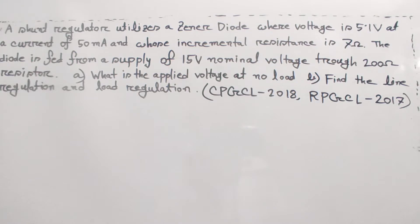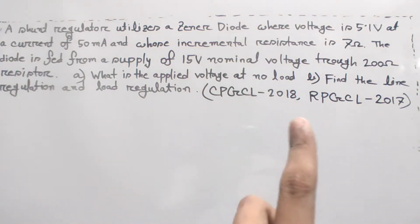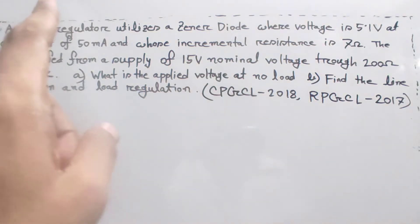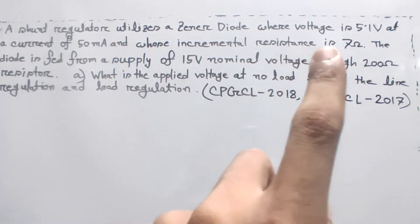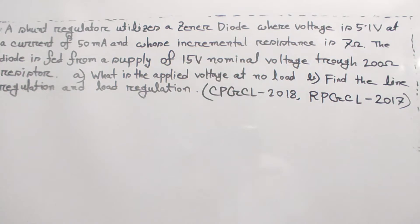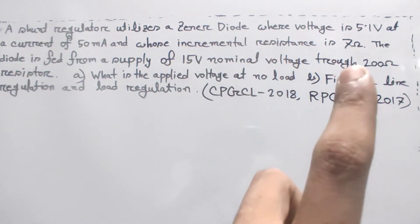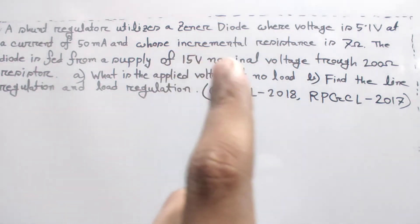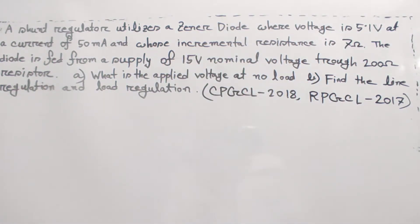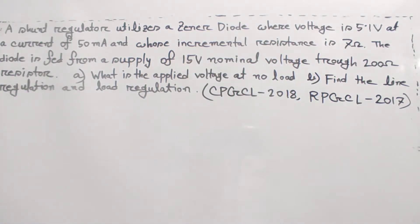At a current of 50 mA and whose incremental resistance is 7 ohm, the diode is fed from a supply of 15V nominal voltage through a 200 ohm resistor. What is the applied voltage at no load? Find the line regulation and load regulation.